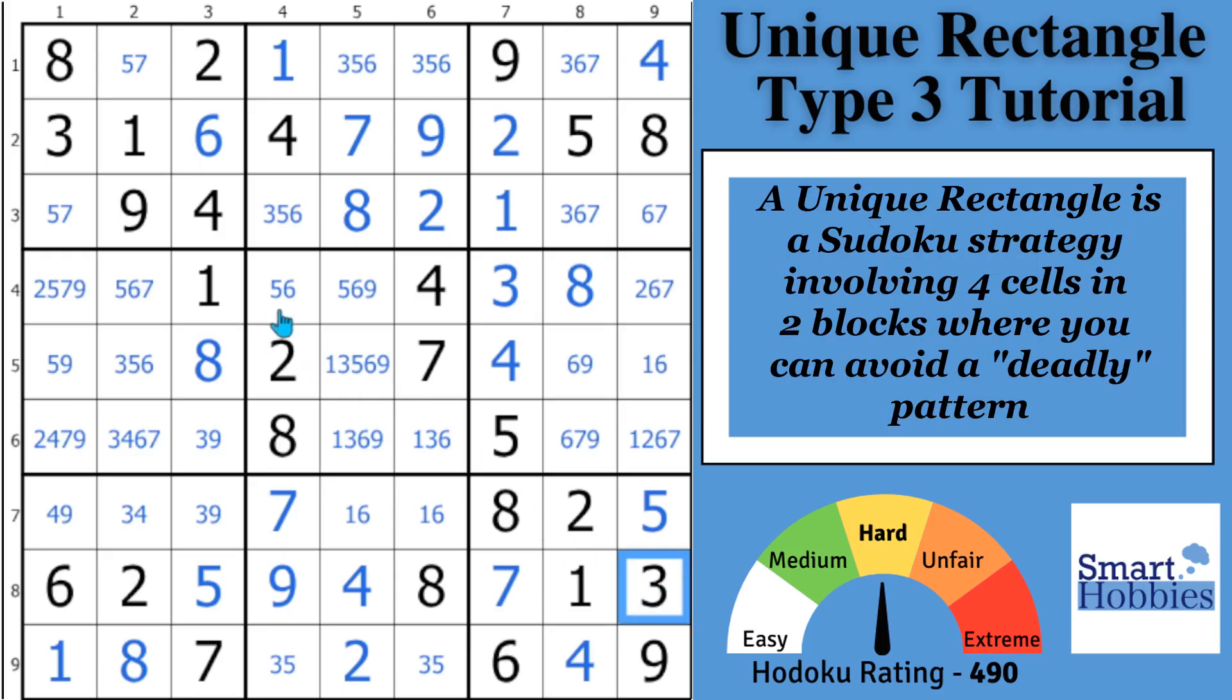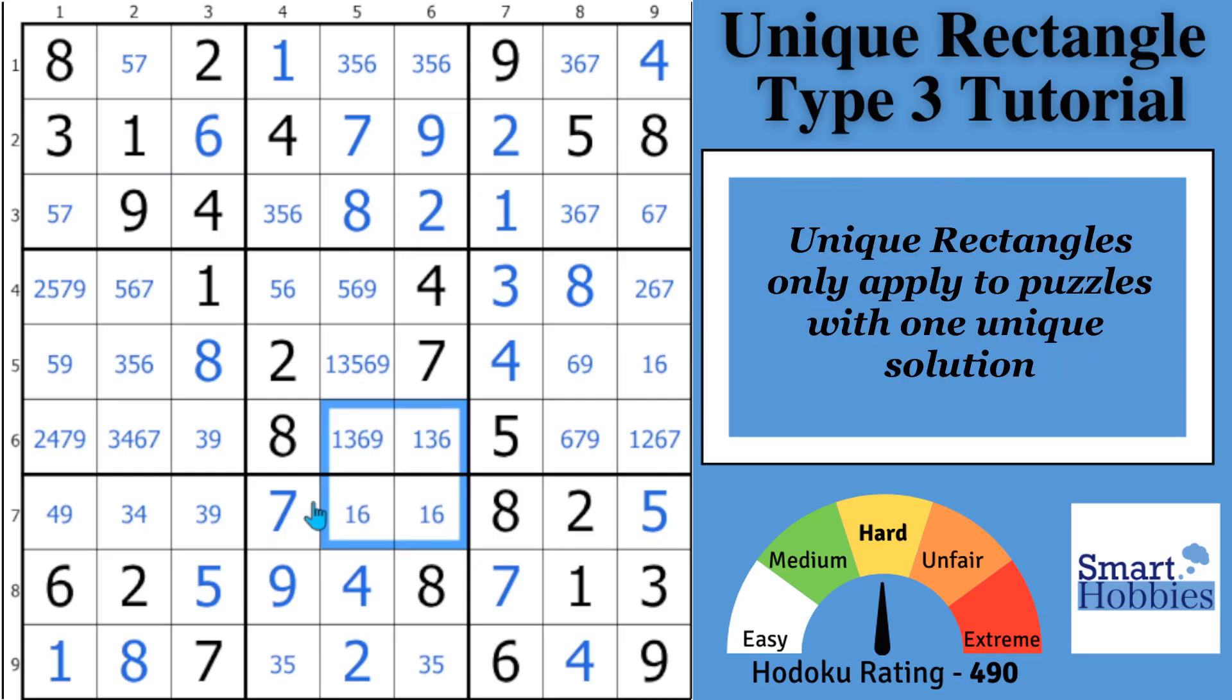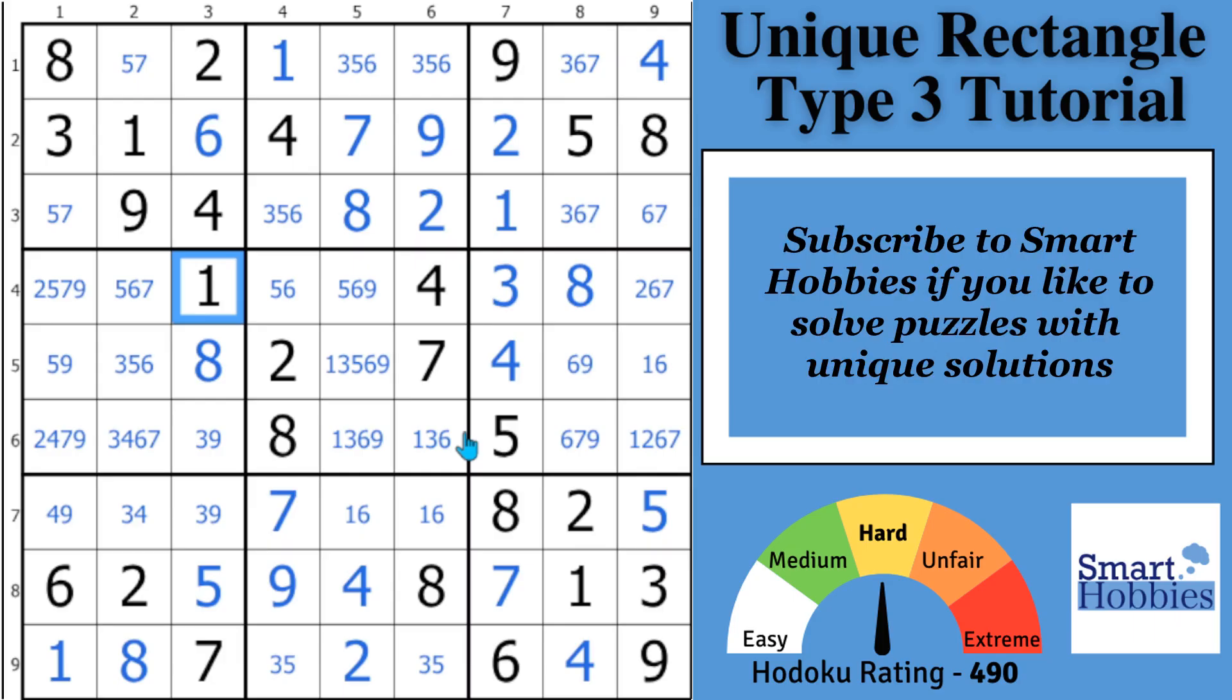A unique rectangle is a Sudoku strategy involving four cells in two blocks where you can avoid a deadly pattern. A unique rectangle only applies to puzzles with one unique solution. Every puzzle I feature on Smart Hobbies has been checked twice for one unique solution, so subscribe if you like to solve puzzles with unique solutions.